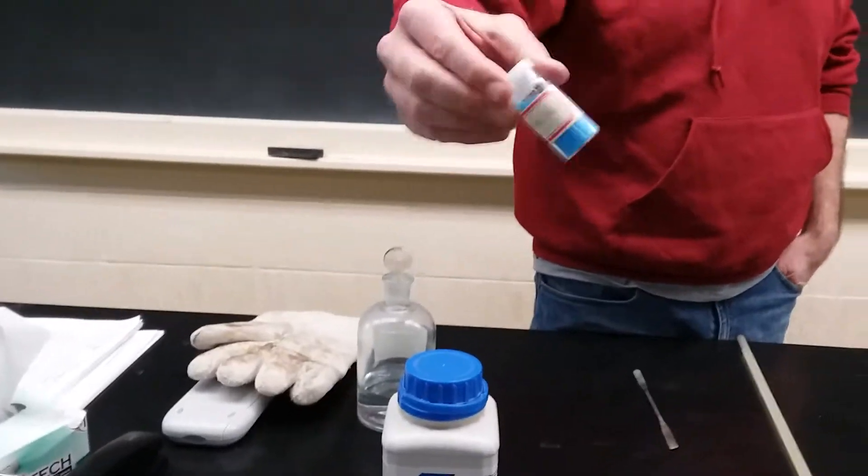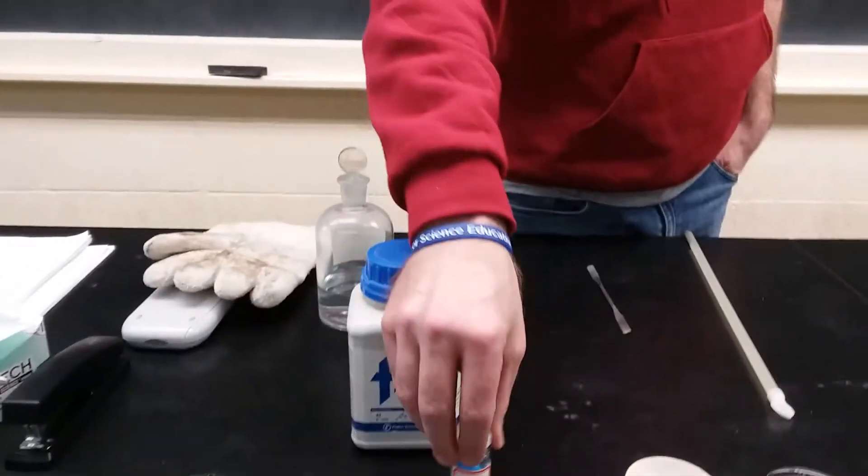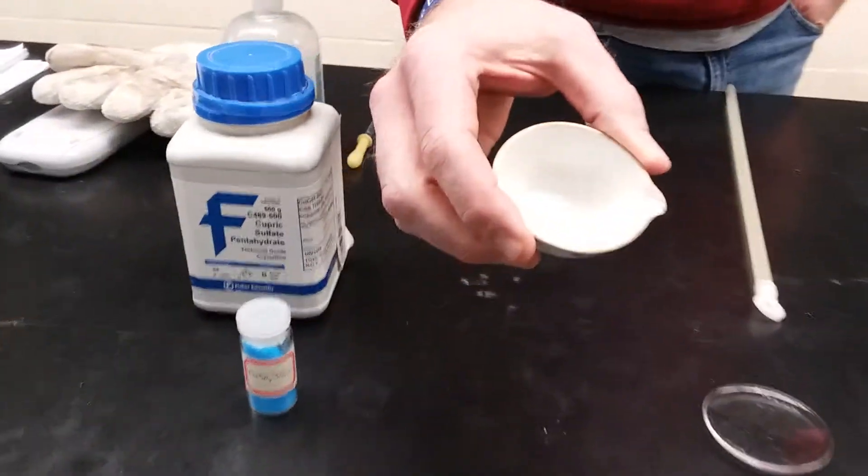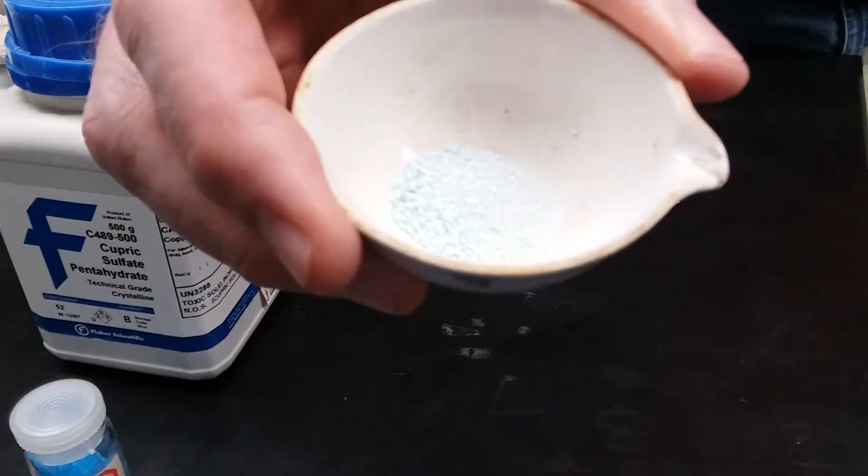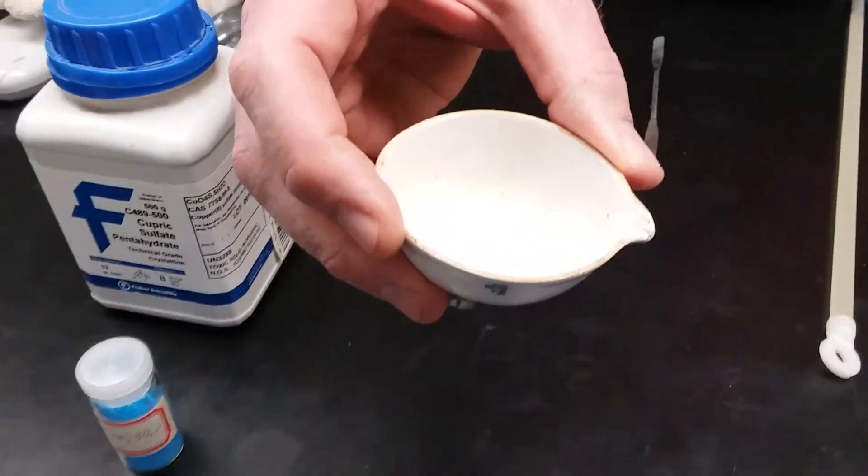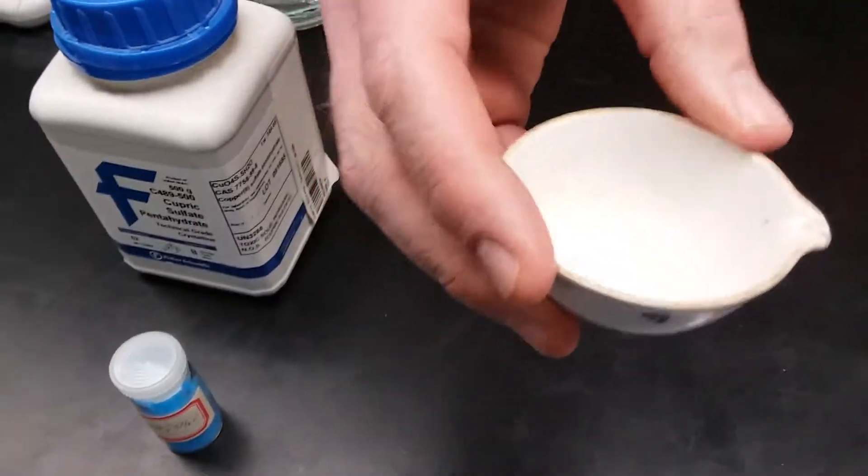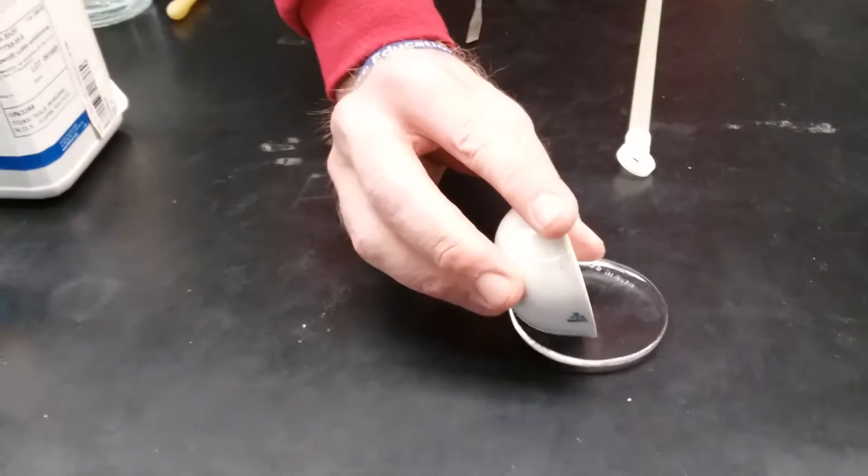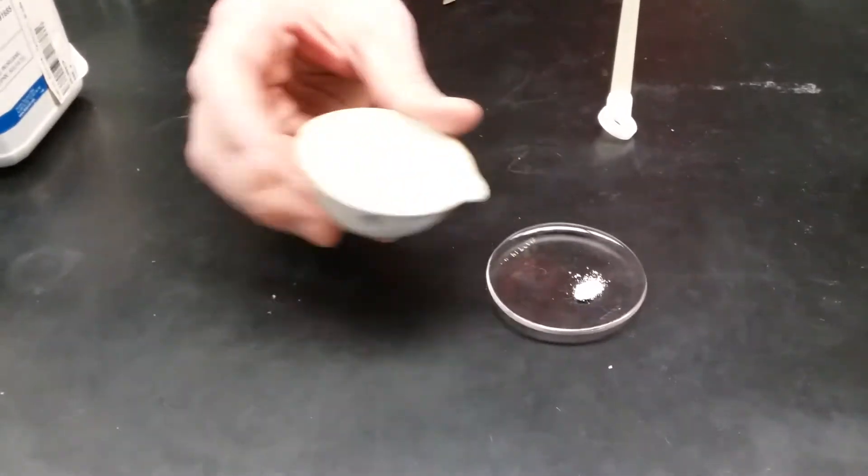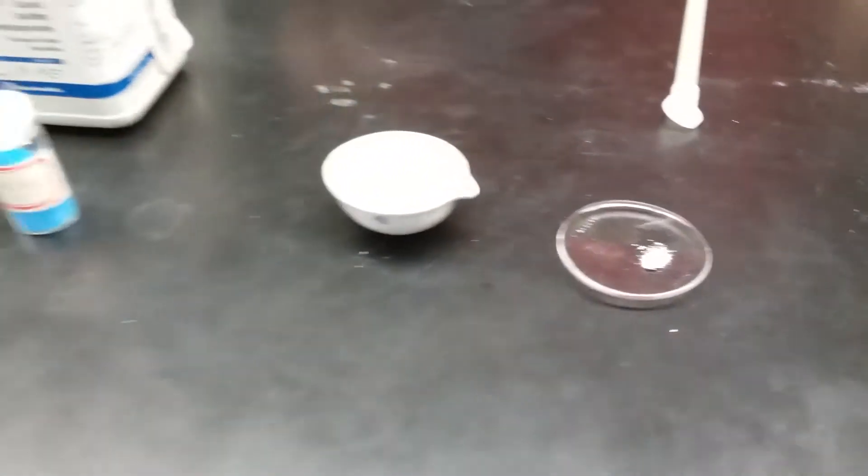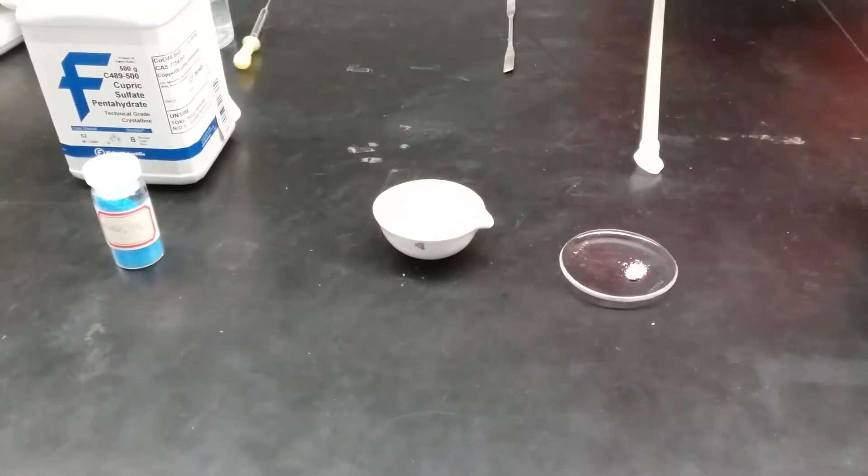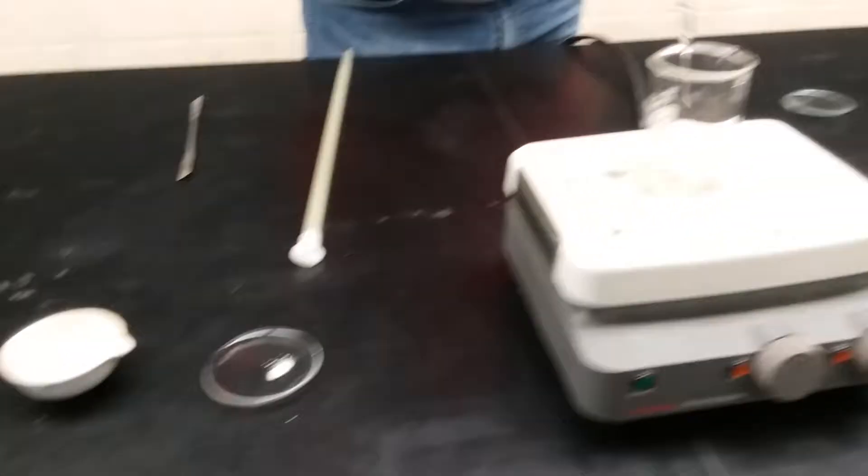So what I did was I took some of this copper sulfate pentahydrate and I heated it on a hot plate, and lo and behold, it gets less blue. I didn't do this entirely, there's still some blue there, but it's kind of white and gray. Today I'm going to put some of this on a watch glass, and then what I'm going to do is add some water to it.